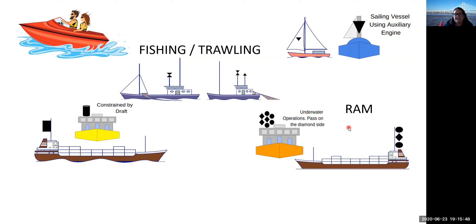We've got restricted in ability to maneuver. A vessel is restricted in its ability to maneuver when the nature of its work restricts its maneuverability — it may be engaged in underwater operations, have divers down, be mark-laying, dredging, or towing with a tow that severely restricts it. The day shape is ball–diamond–ball, hoisted above the superstructure. The diamond is restricted between the two balls.